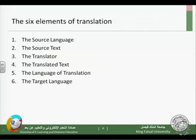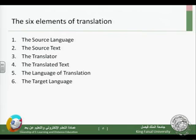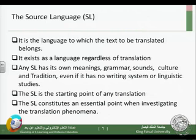As mentioned in the introduction, the six elements of translation will be covered in more detail. We will discuss the source language, the source text, the translator as a major element, the translated text, the language of translation, and the target language. The source language has the initials SL, so whenever you see SL in a translation textbook, it means the source language.